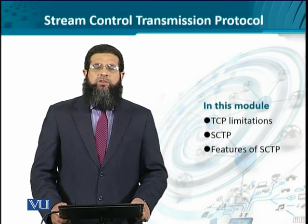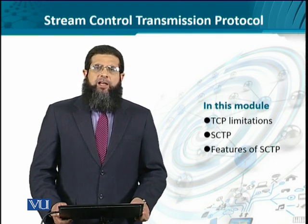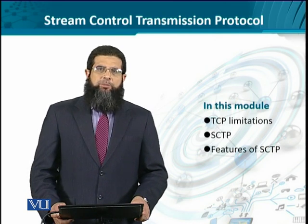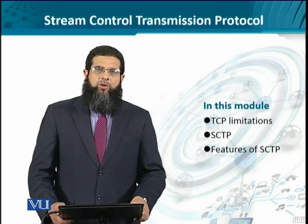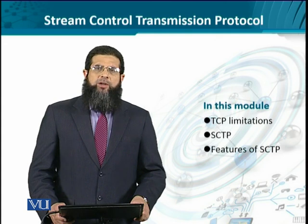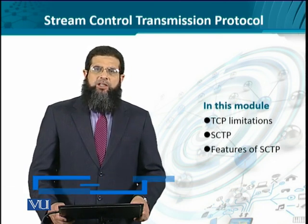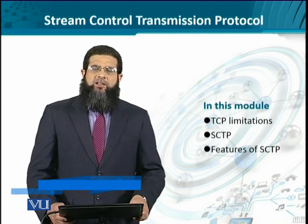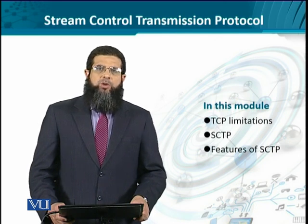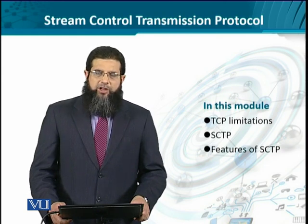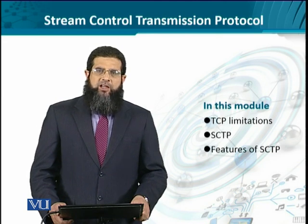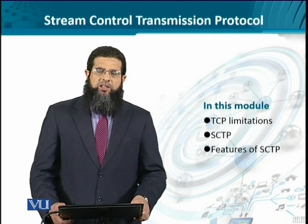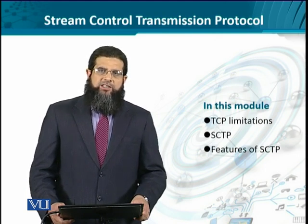TCP seemed to be an all-out winner when compared against UDP in an all-IP scenario, where end hosts and internetworking devices were all in the same environment. The requirement was only to ensure congestion control, reliability, flow control, and in-order delivery within that network. However, the situation changed when this all-IP network had to be integrated with other external networks. In this module, we shall explore Stream Control Transmission Protocol (SCTP), which is an extension and a value-added reliable protocol at the transport layer that inherits many features from TCP but successfully avoids its limitations.